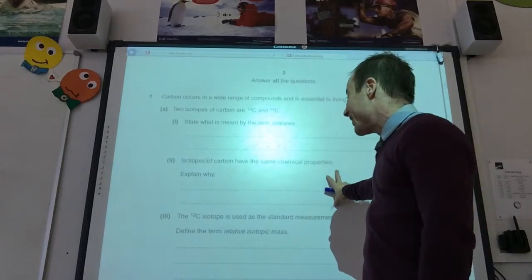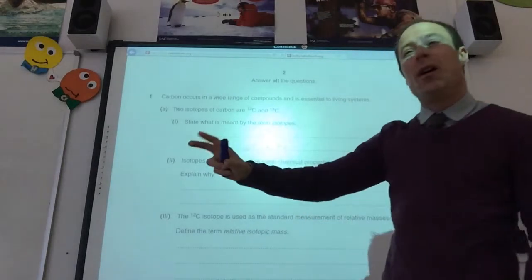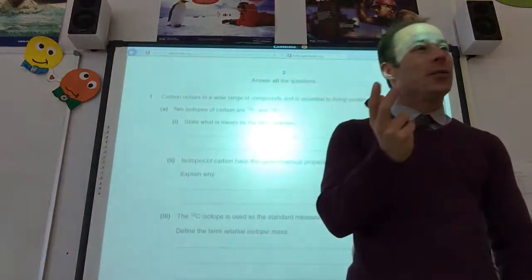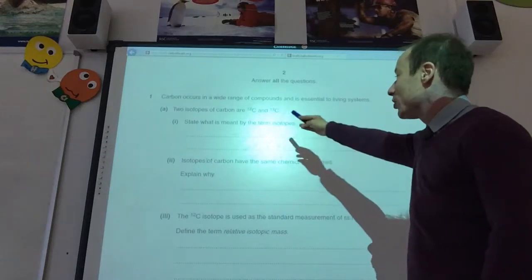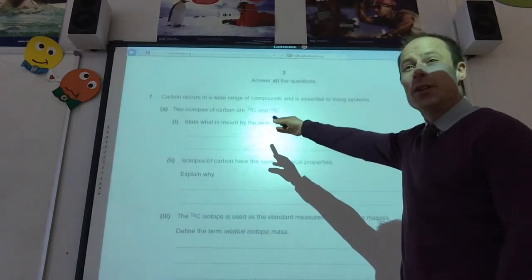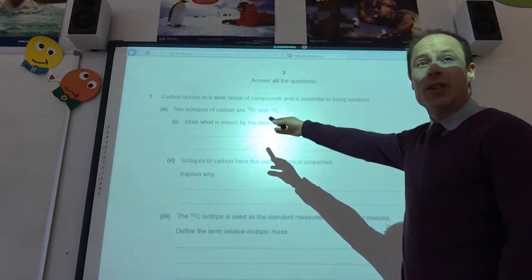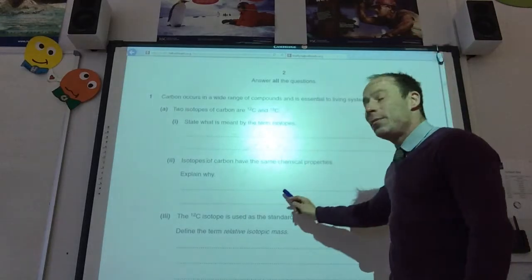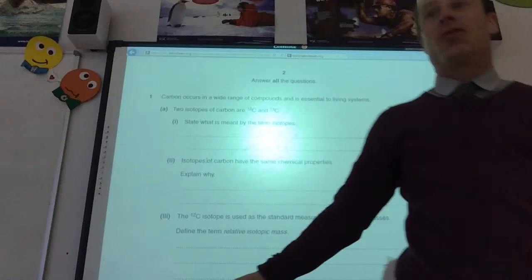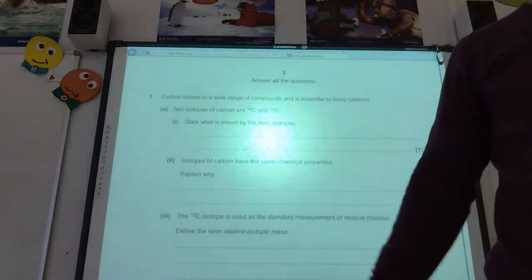Isotopes of carbon have the same chemical properties. Why? Remember, chemical properties are just about electrons. What can we say about the number of electrons in these two different types, in these two isotopes? The number of electrons are going to be the same. So, same number of electrons in the outer shell.